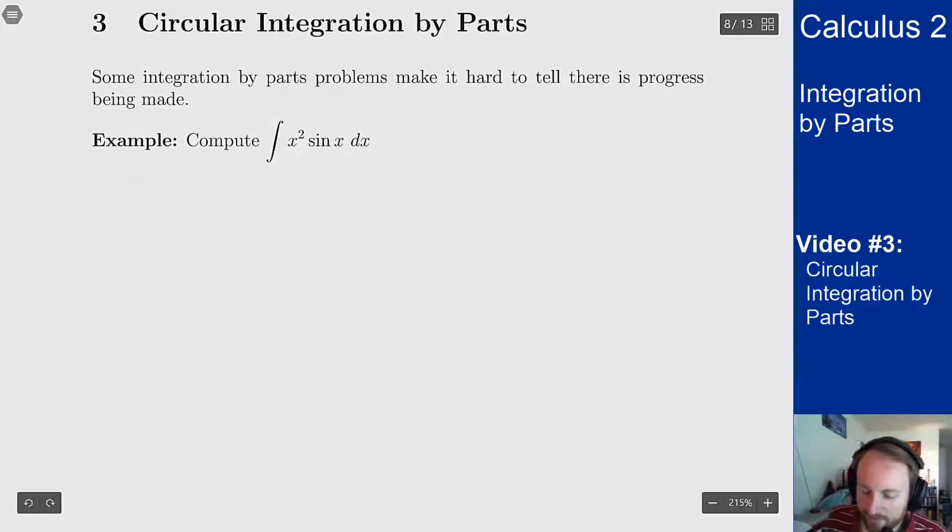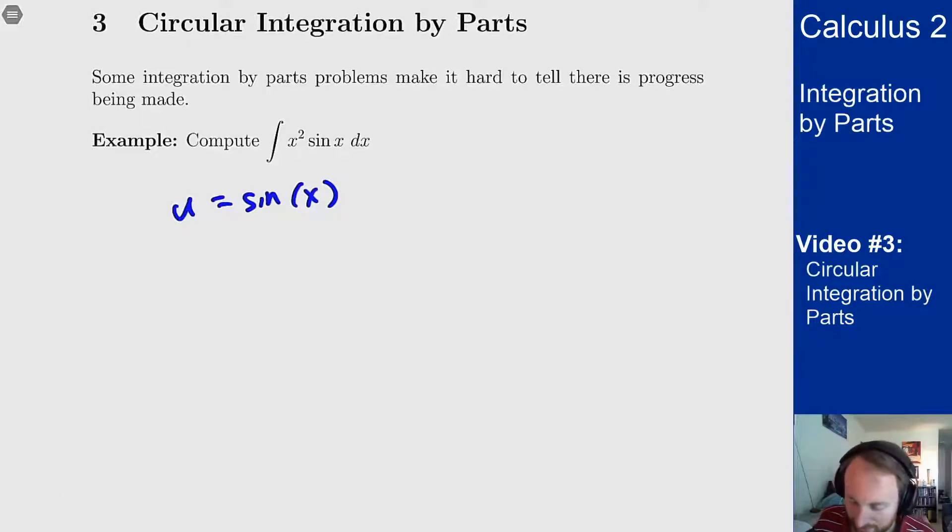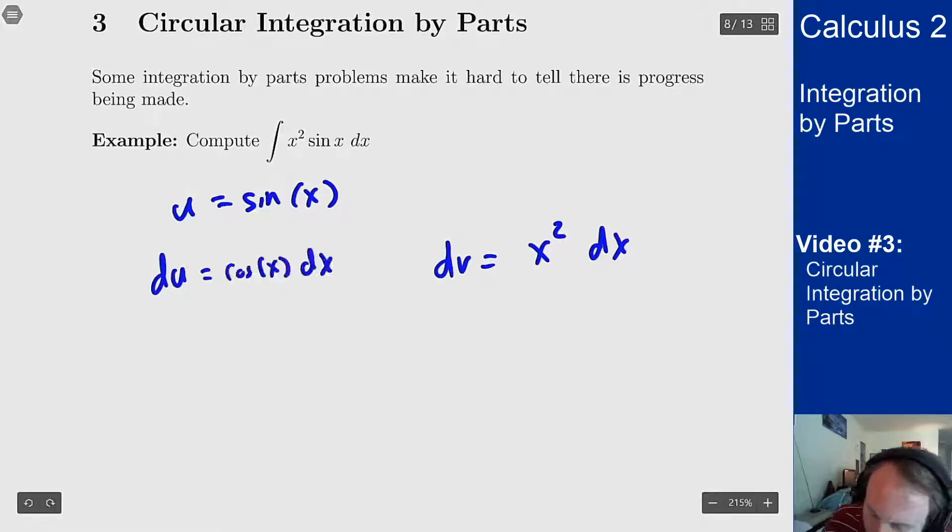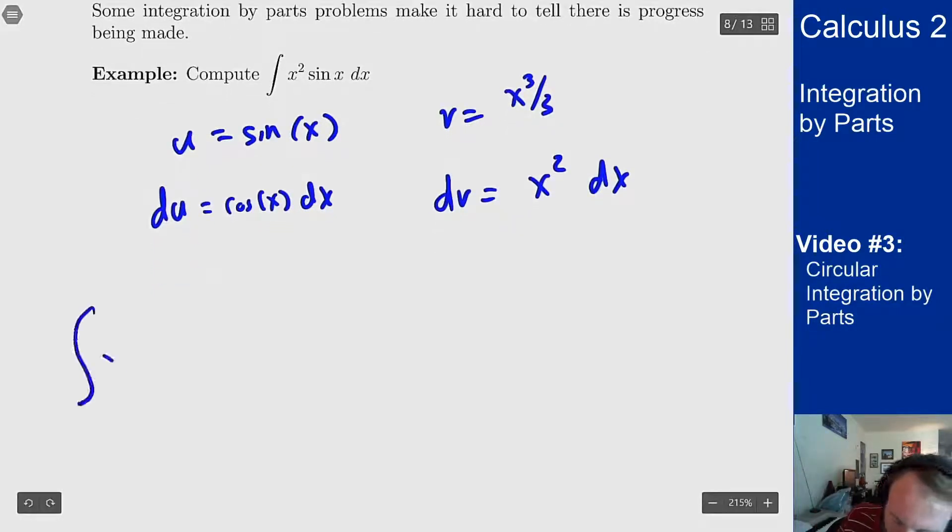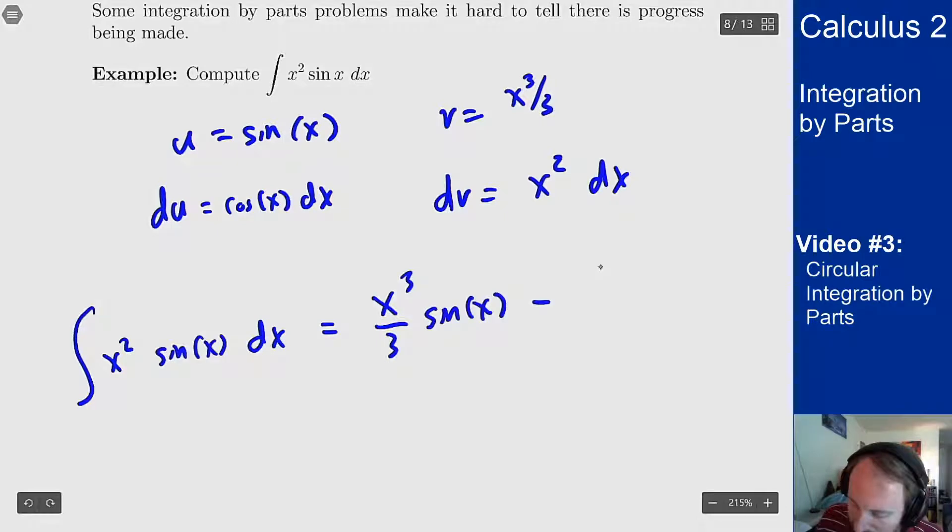What happens if instead of taking u to be the x squared term, I take u to be the sine of x term? That still seems valid. I can differentiate that and I can integrate the x squared term. Both of those are totally fine. We'll see what happens when I plug this in. So if u is sine of x then du is cosine x dx and then v is x cubed over 3. So when I do this integration by parts I get integral of x squared sine of x dx equals u times v minus the integral of v du.